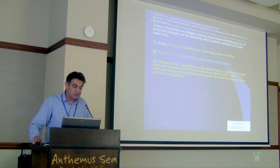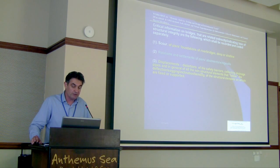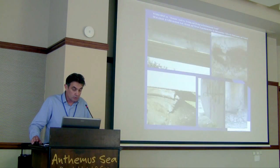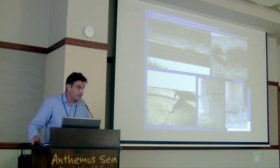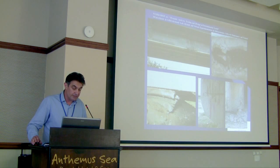Critical information on bridges that indirectly indicates loss of structural integrity includes: scour of piers, foundation of river bridges, rotation and settlement of piers, displacement, destruction of safety barriers, collecting drain pipes, and in general all non-structural elements that follow the deflection of structural elements. Here we have some representative severe defects and damages in Greek bridges, most of them never inspected and maintained.